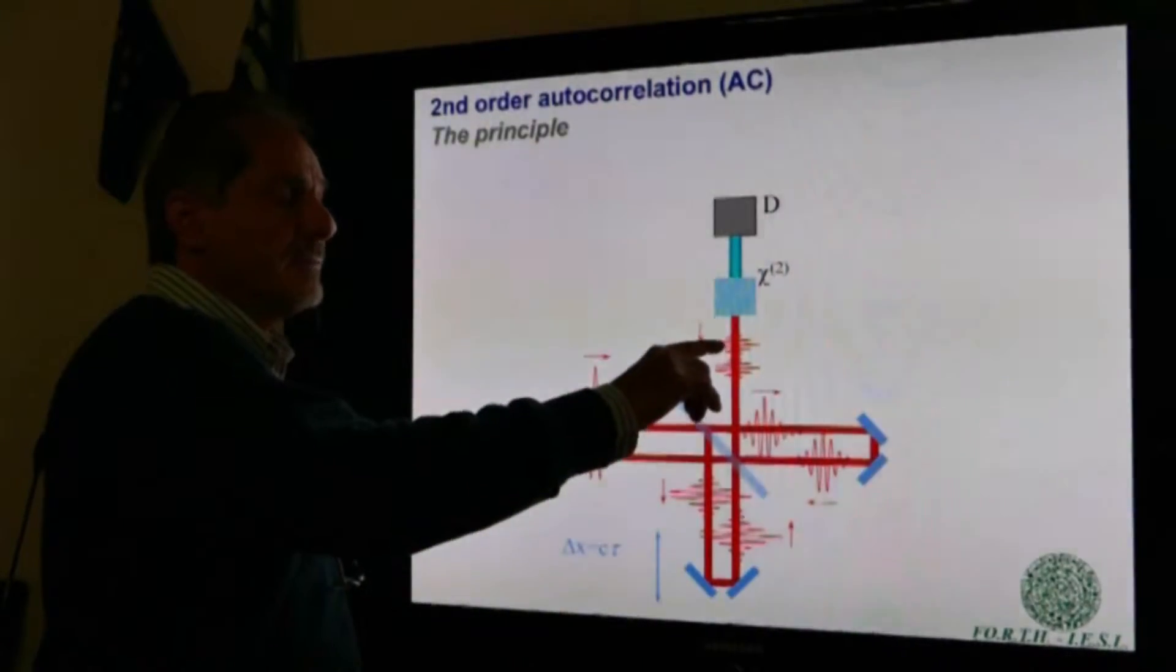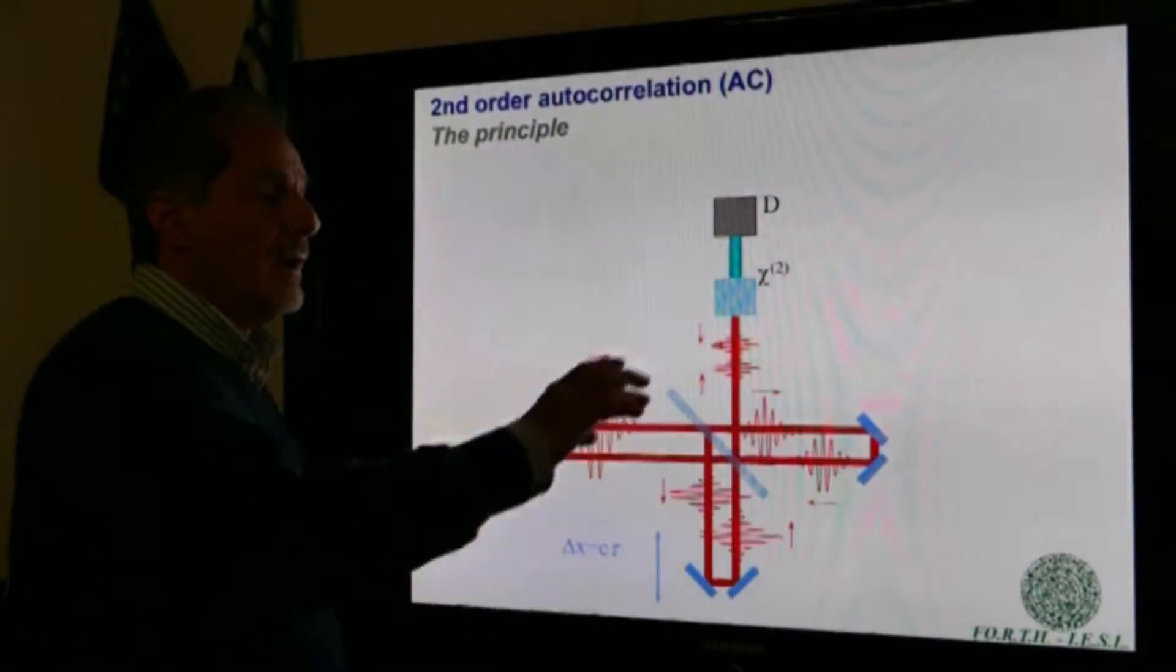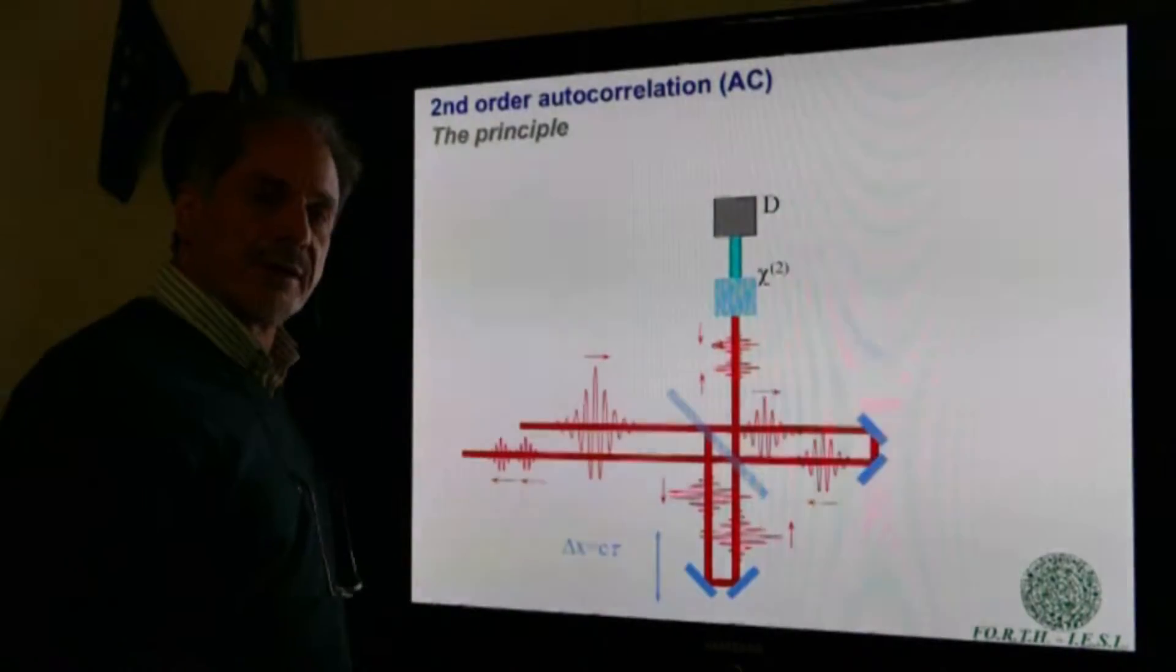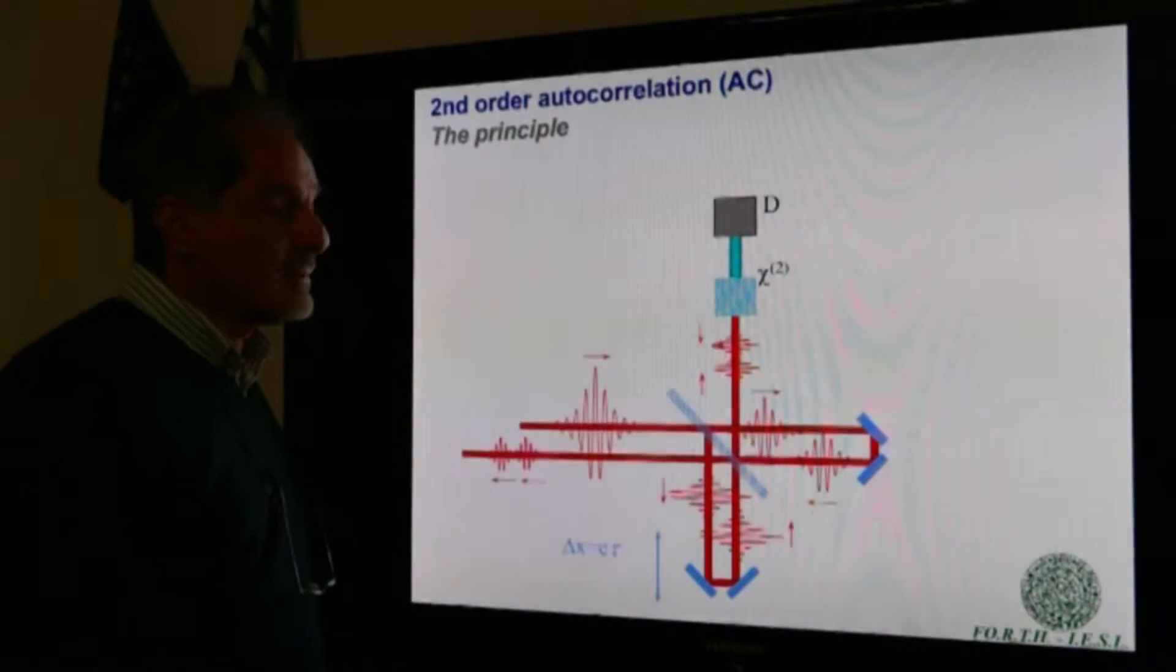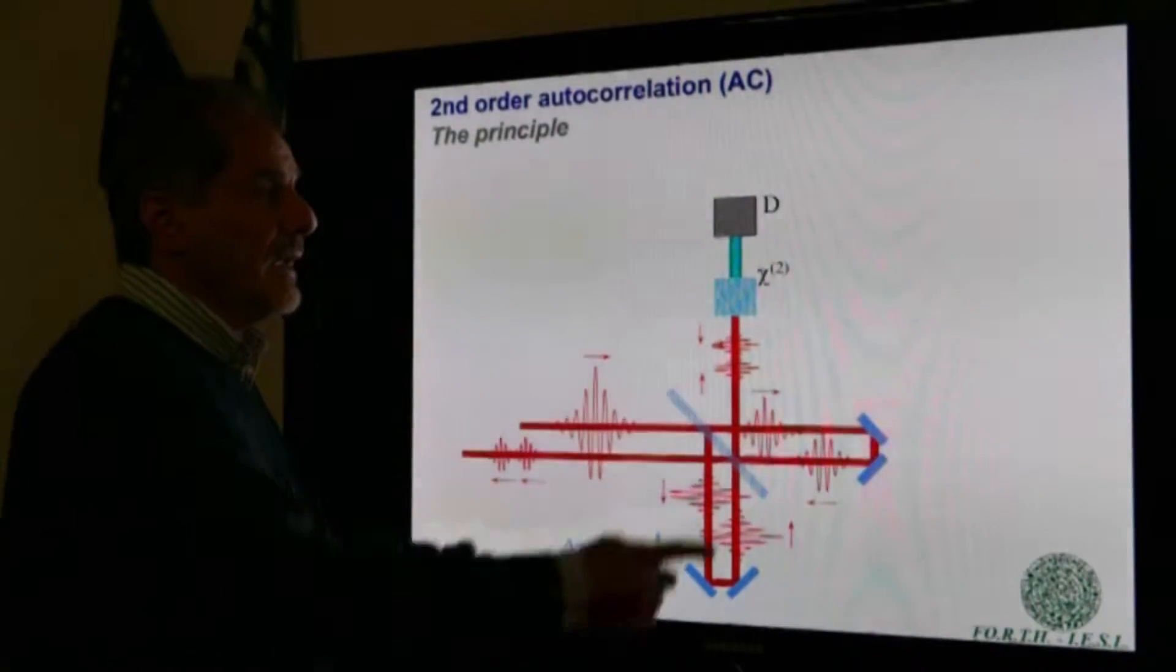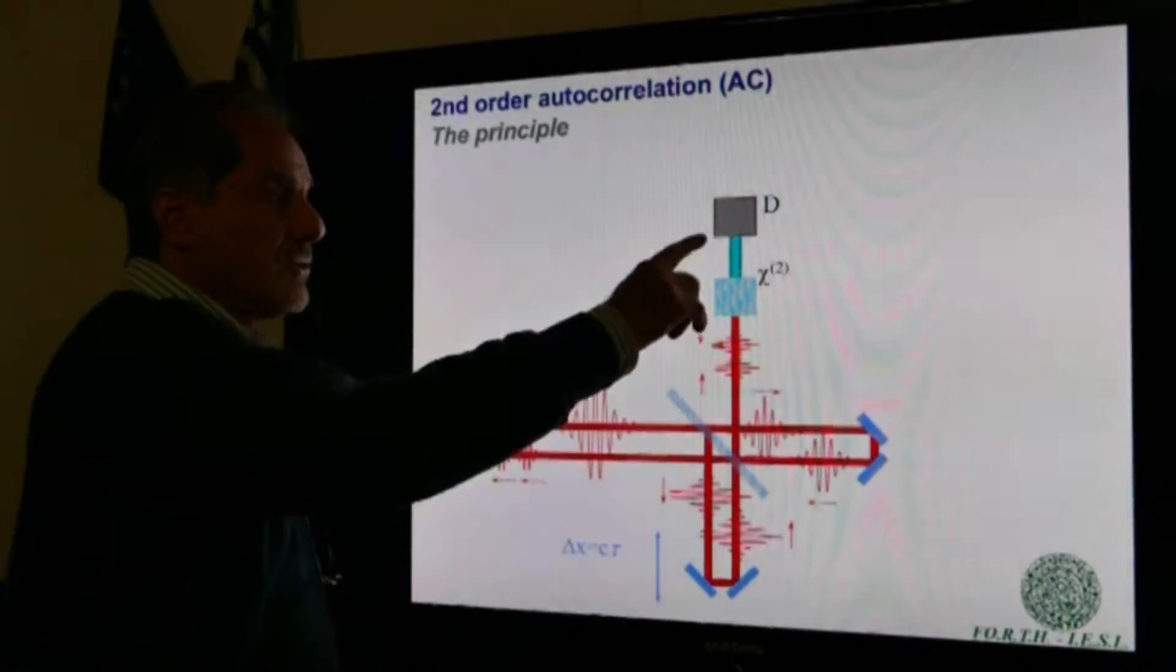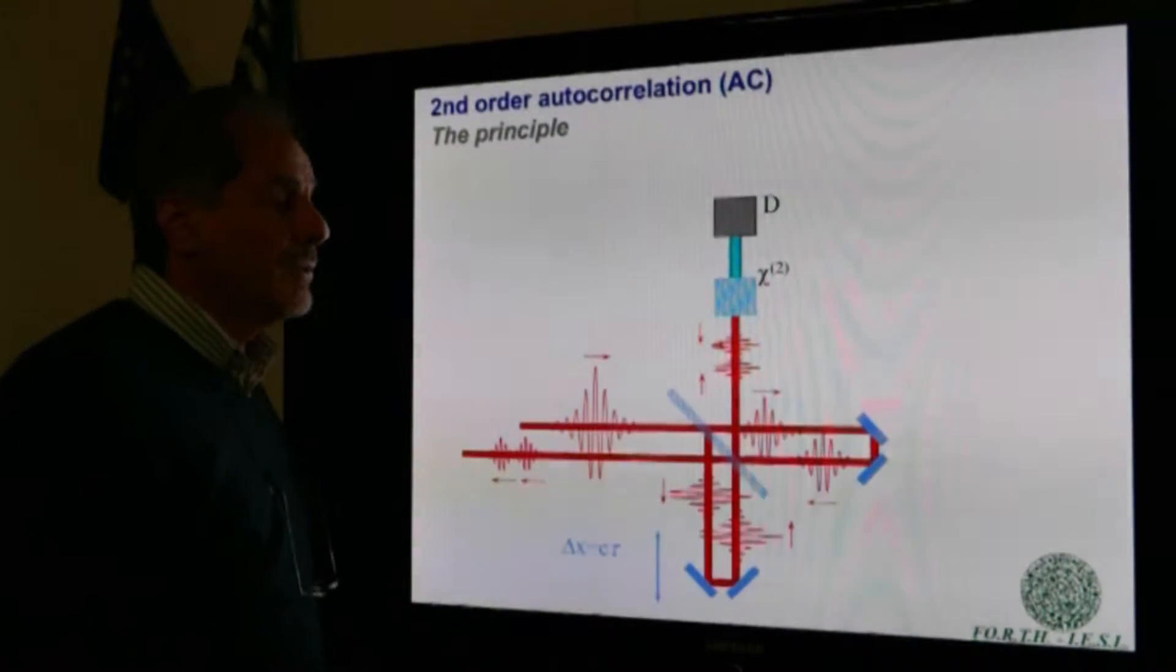The two replicas are then inducing in a nonlinear crystal a second-order process, like second harmonic generation, and the signal of the second harmonic is measured as a function of the delay between the two pulses.